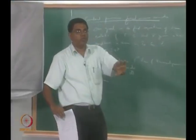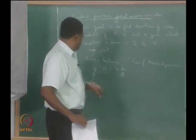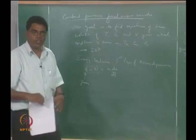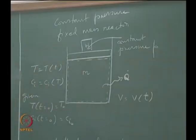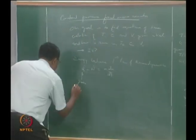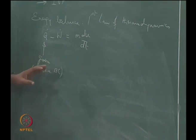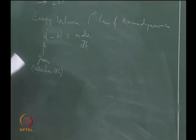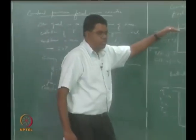Since we decided not to worry about spatial variation and are looking only at temporal variation — ODEs in time — q-dot acts like a collective boundary condition: the net heat flux across all surfaces. You do not require a separate boundary condition for each surface, but rather a single given value representing the collective BC. W-dot is essentially the expansion work.